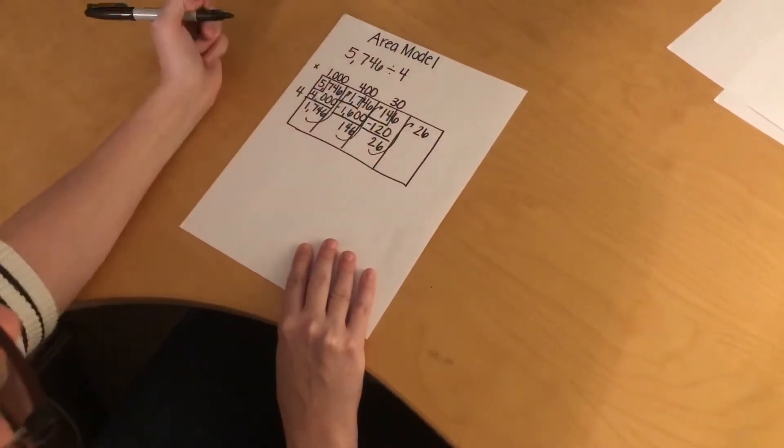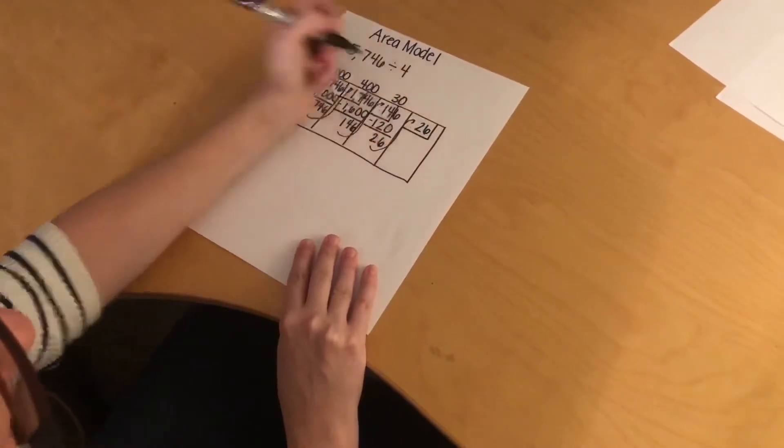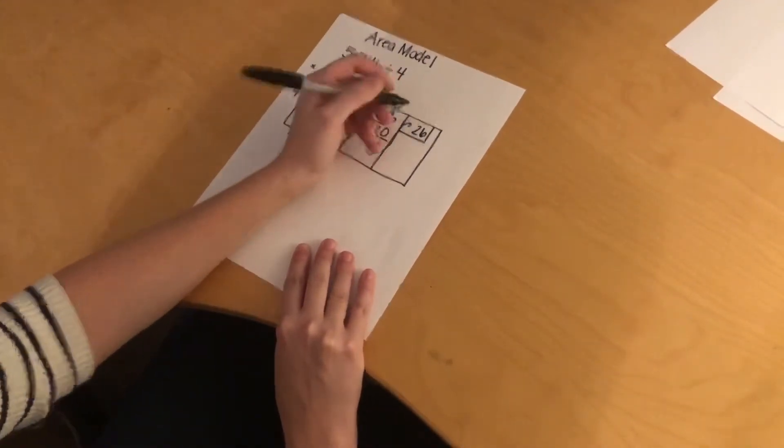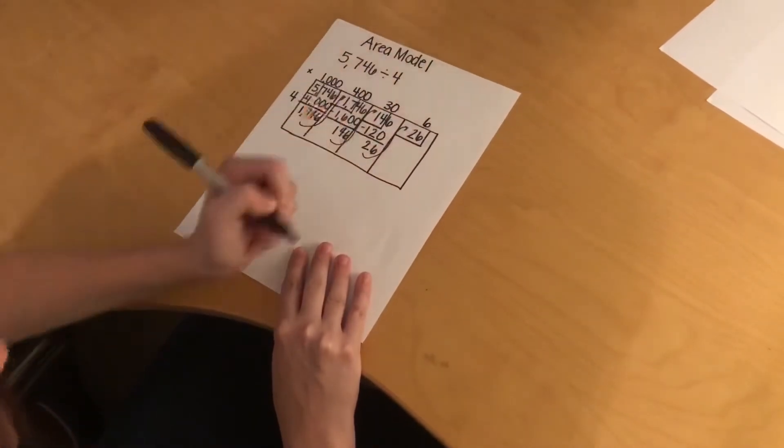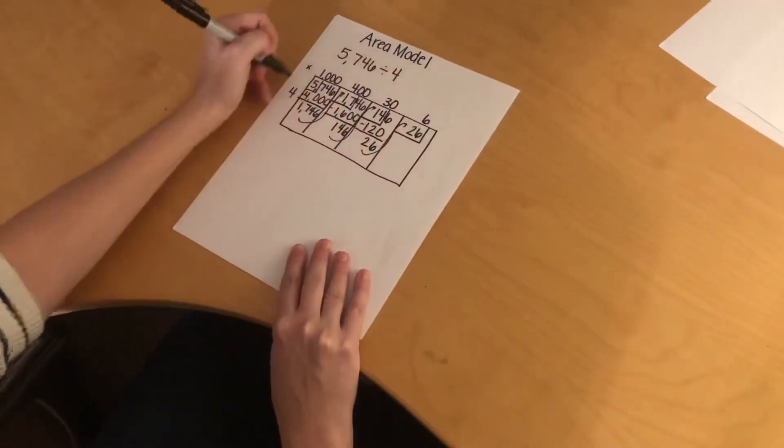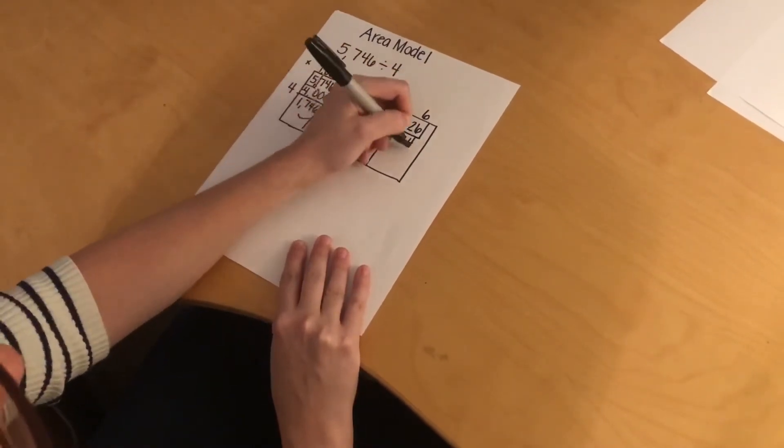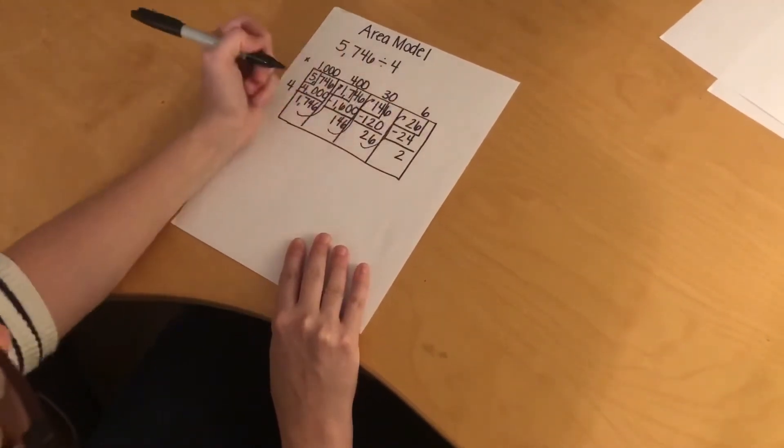Now I'm in the ones place, and now I have everything in my box. So how many times does 4 go into 26? It can go in 6 times. I multiply 6 times 4, which is 24. I subtract 26 minus 24, I have 2 left over.